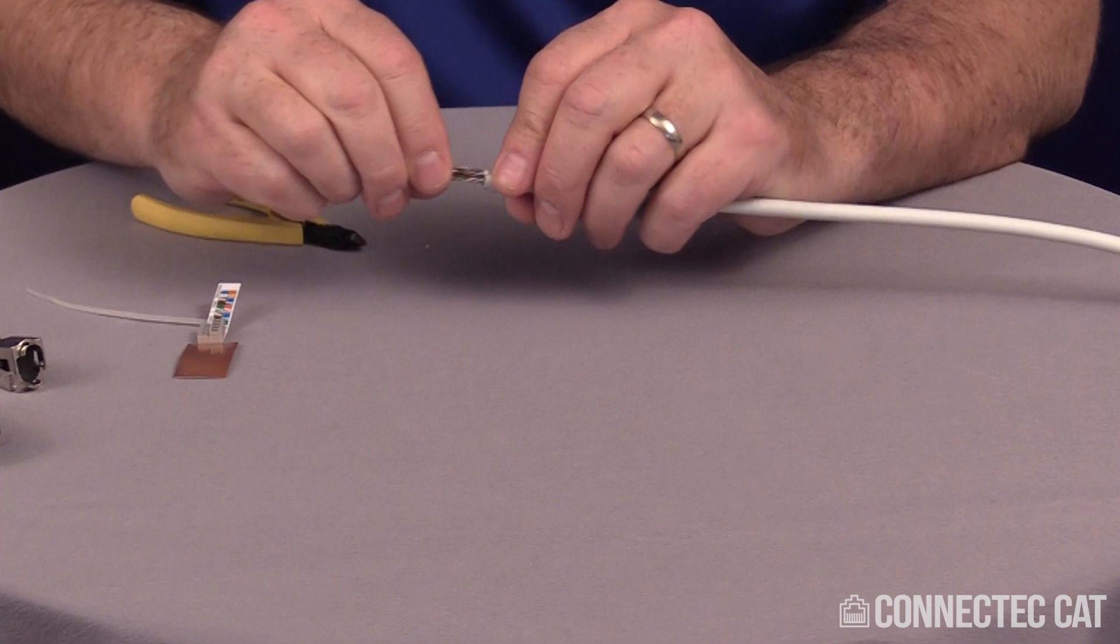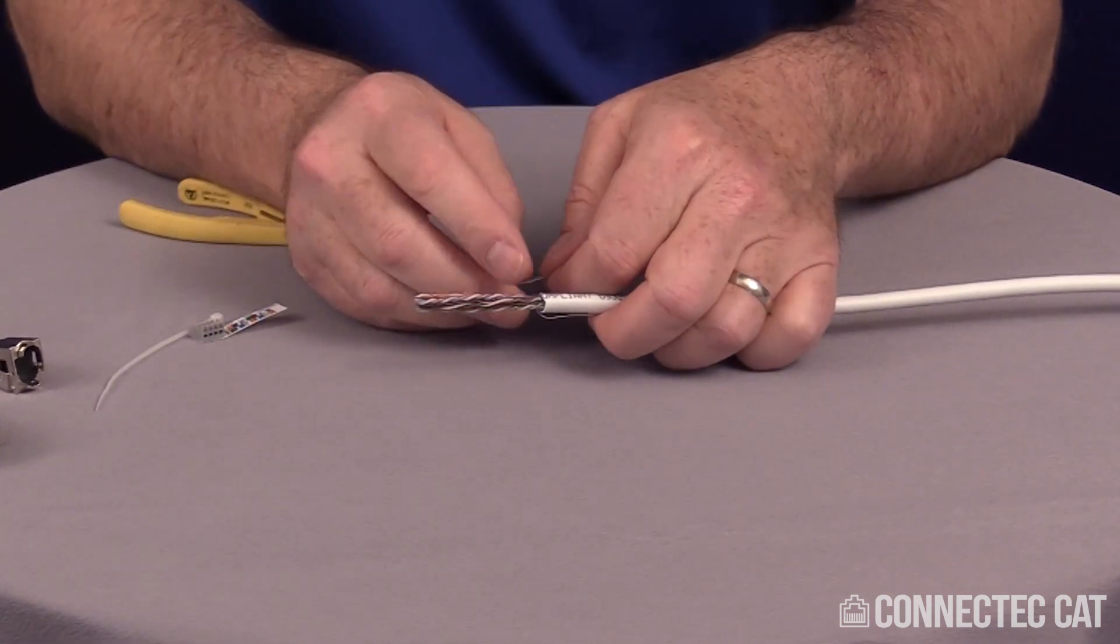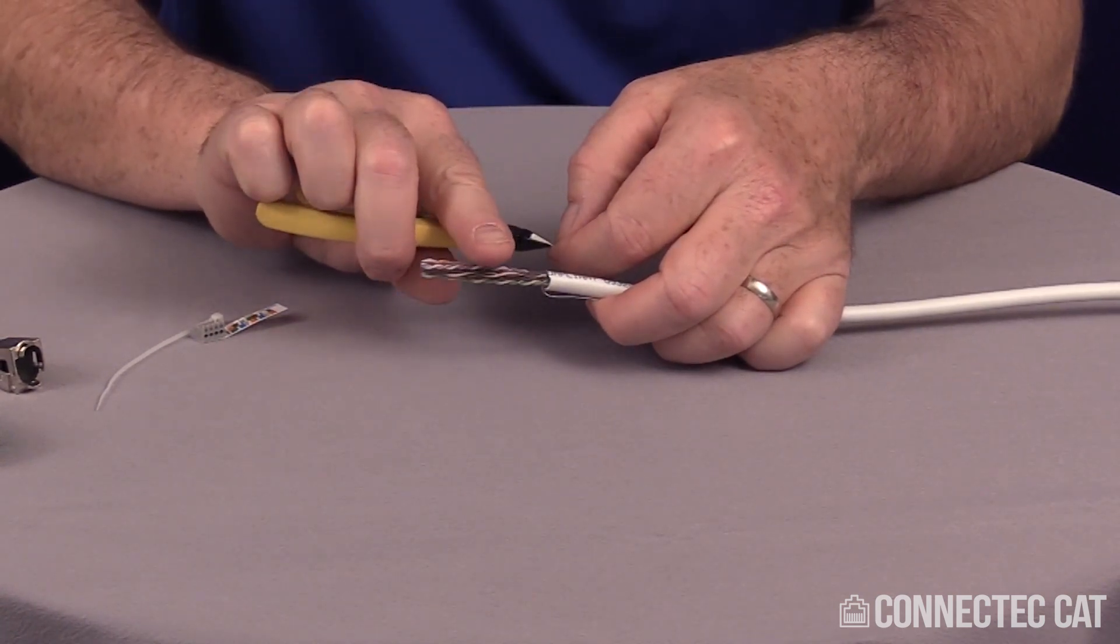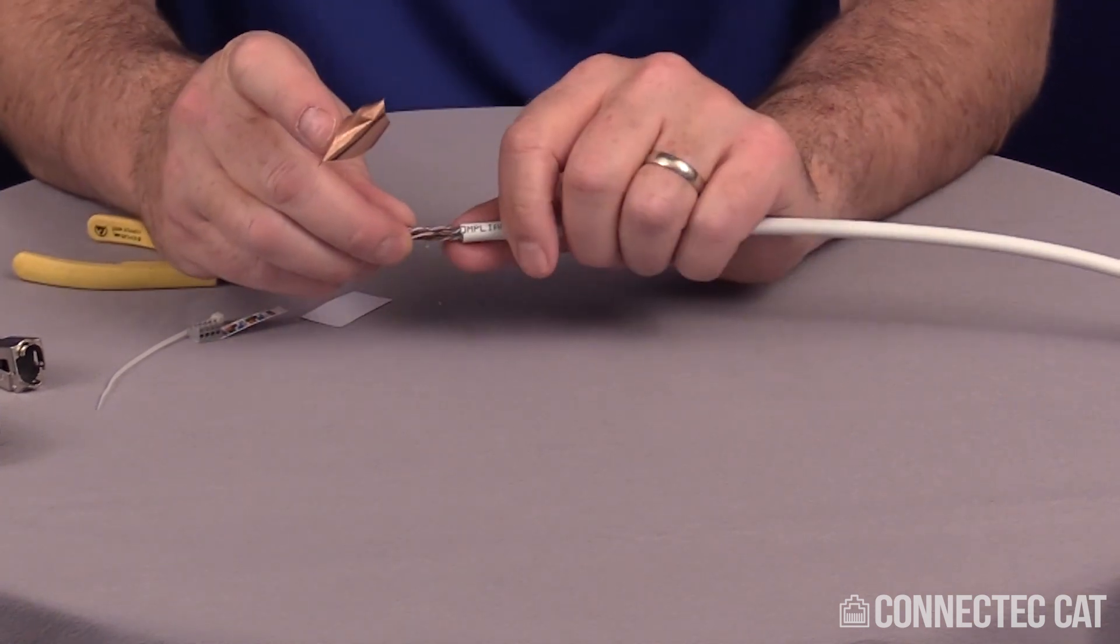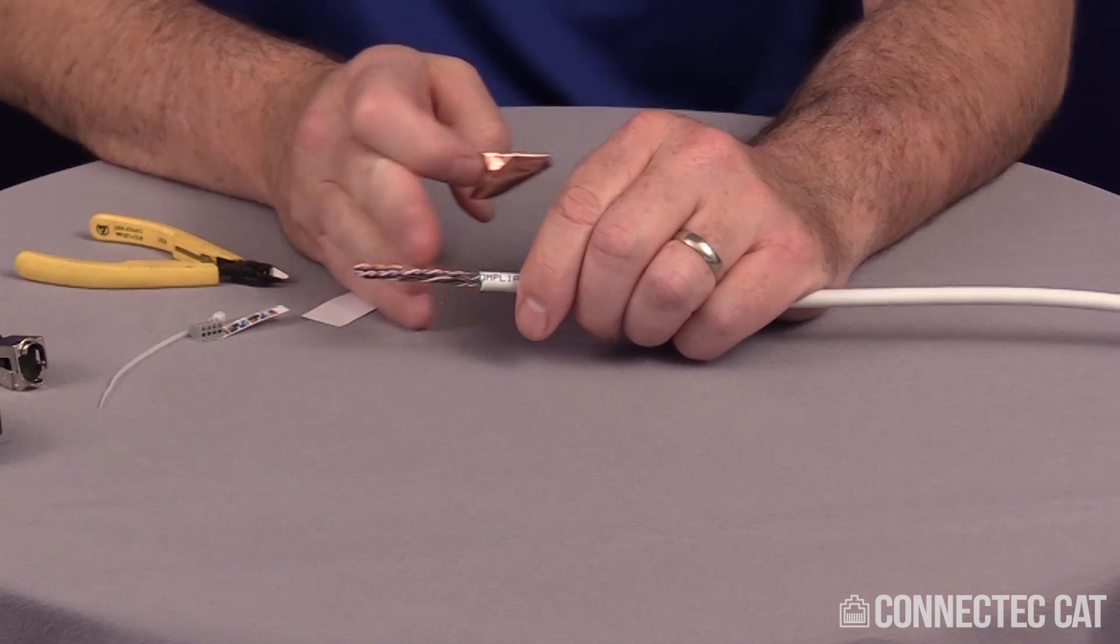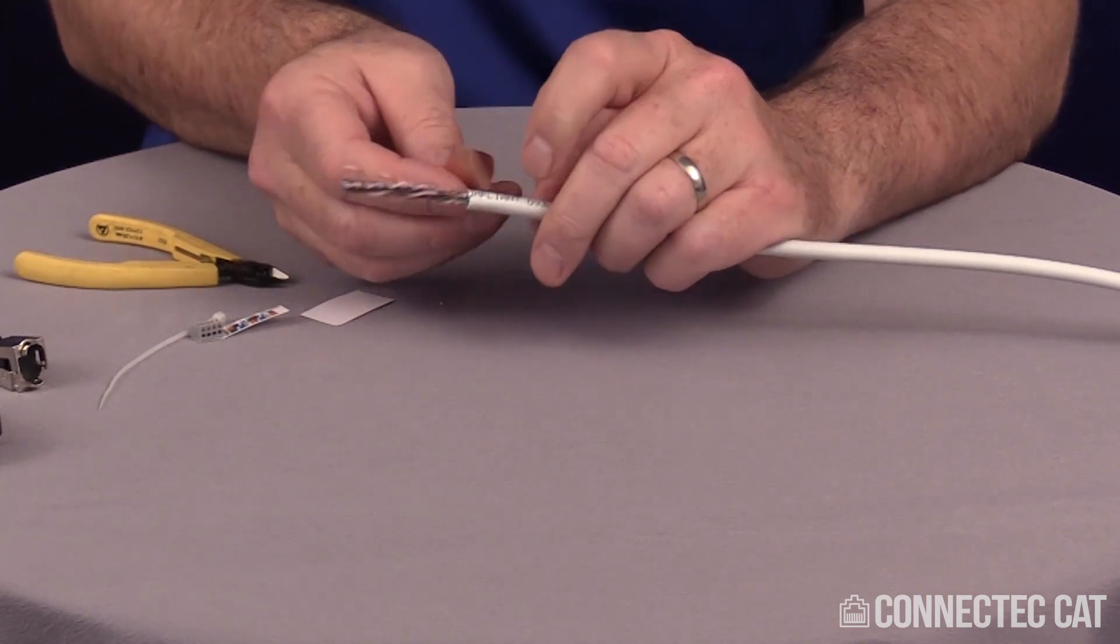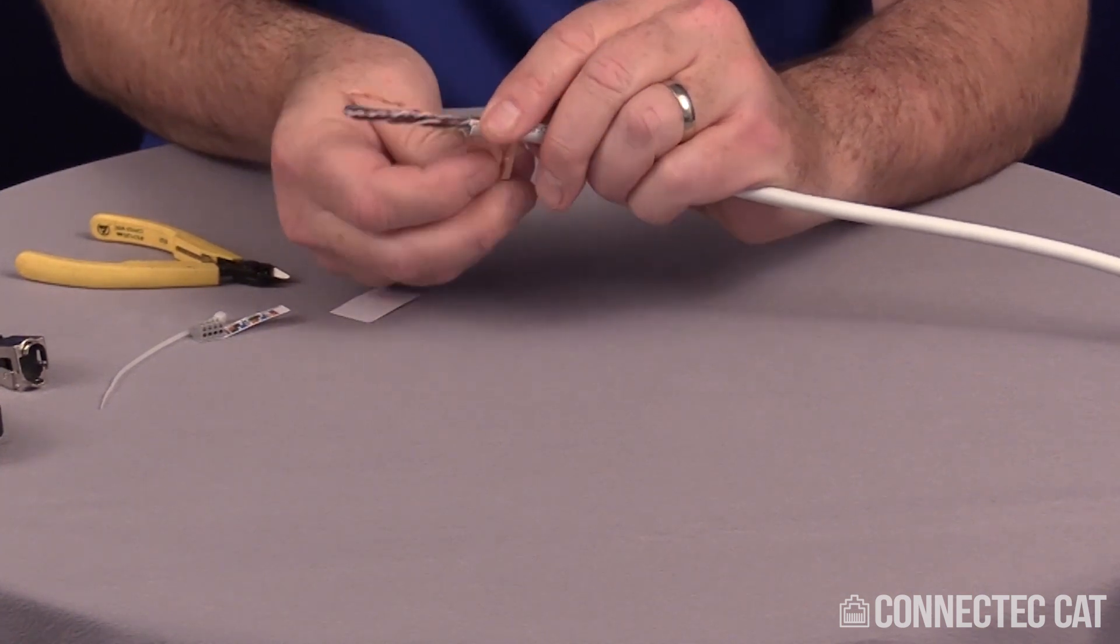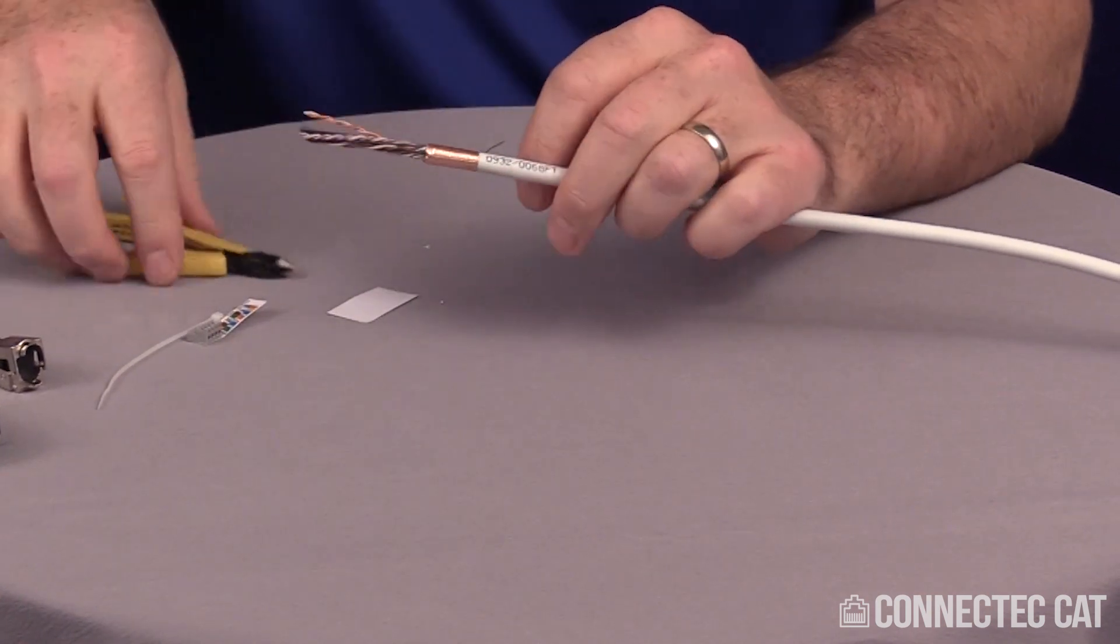Now I'm going to anchor my drain wire with the copper tape. Taking the copper tape, start at a corner. Then take your diagonal cutters, gently grip the copper, give it a little tug and it'll come right off. When you put the copper tape on, don't go past the jacket. If you go past the jacket, when these conductors bend back you could cut them and cause a short. Just below the jacket, lay the copper tape, make it nice and smooth, and wrap it around. Now I can cut off my excess drain wire.